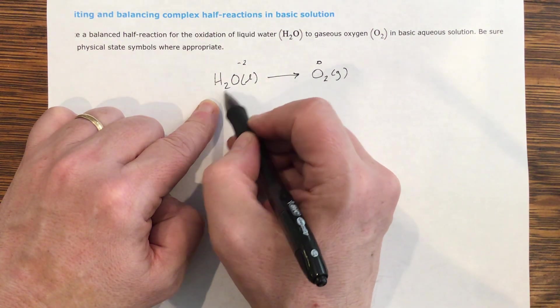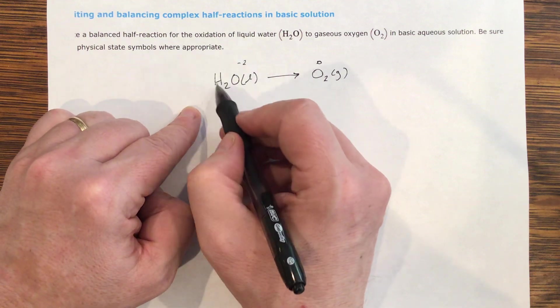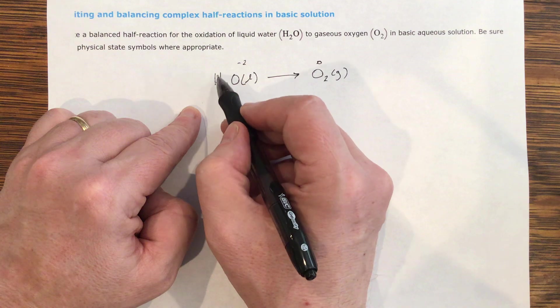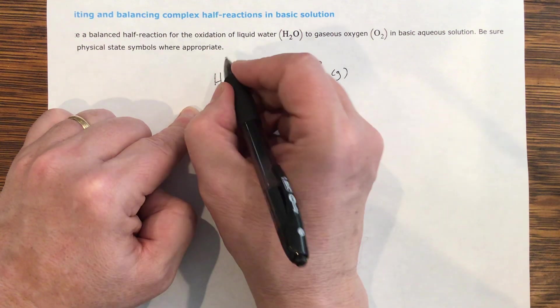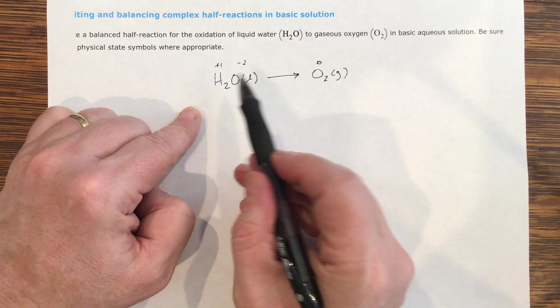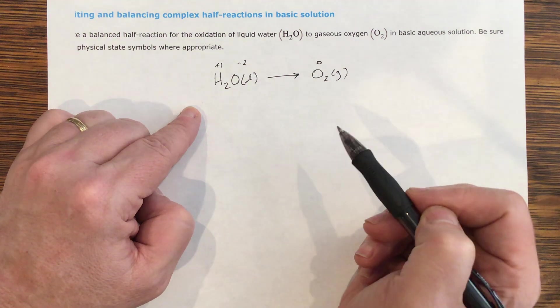Now, hydrogen: two hydrogens are going to balance with a negative two, because every compound is always going to be neutral. So there's two ones to get to a negative two, two positive ones. So in this case, I've got a positive one for hydrogen, a negative two for oxygen, and a zero for O2.